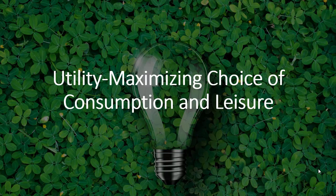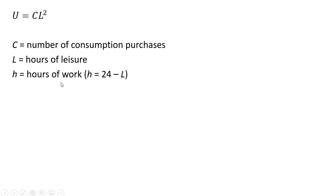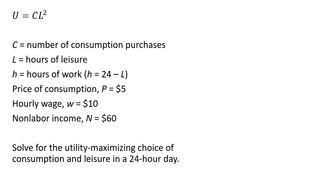In this video, we're going to look at the utility maximizing choice of consumption and leisure. The utility function is given by u equals c times l squared. c is the number of consumption purchases, l is hours of leisure, and h is hours of work. We assume there are 24 hours in a day, so hours of work equals 24 minus hours of leisure. The price of consumption is $5, the hourly wage is $10, and this person has non-labor income equal to $60. We want to solve for the utility maximizing choice of consumption and leisure in a 24-hour day.